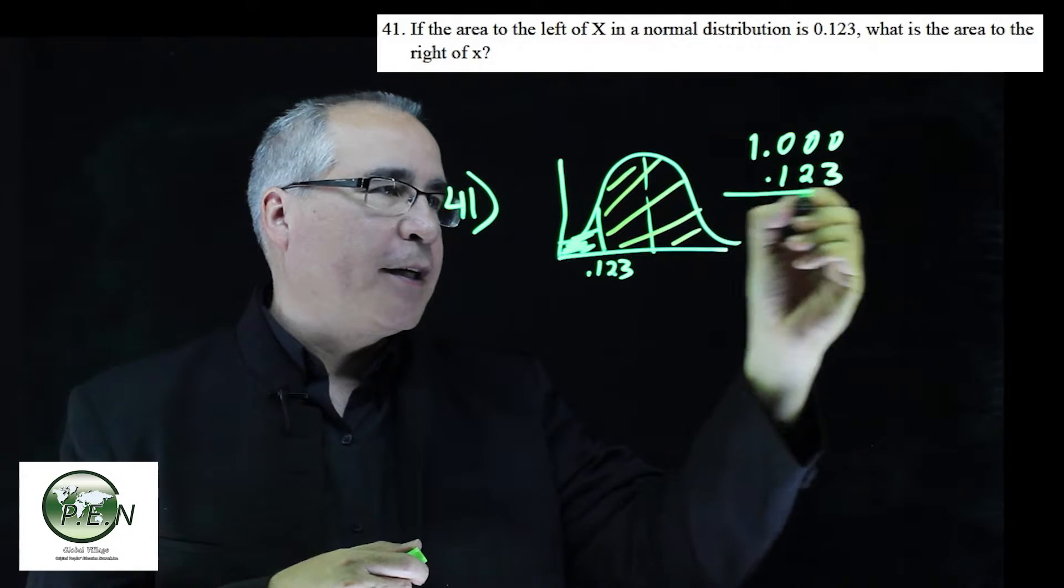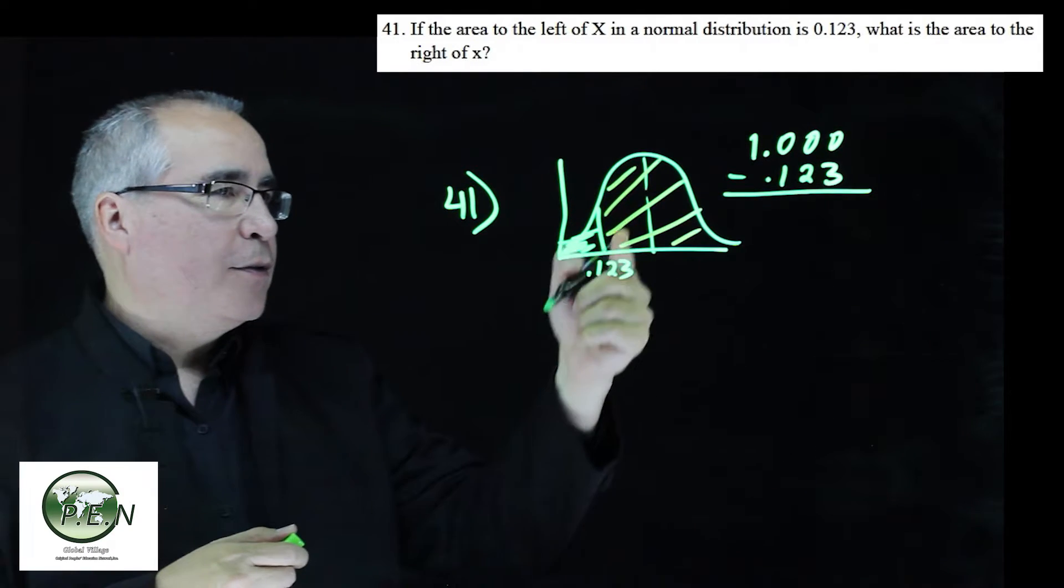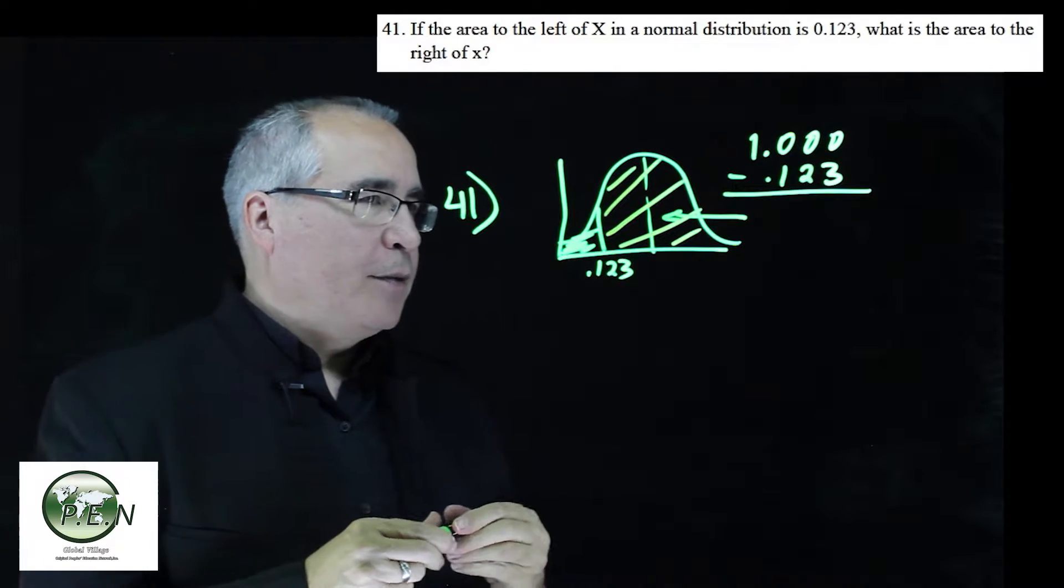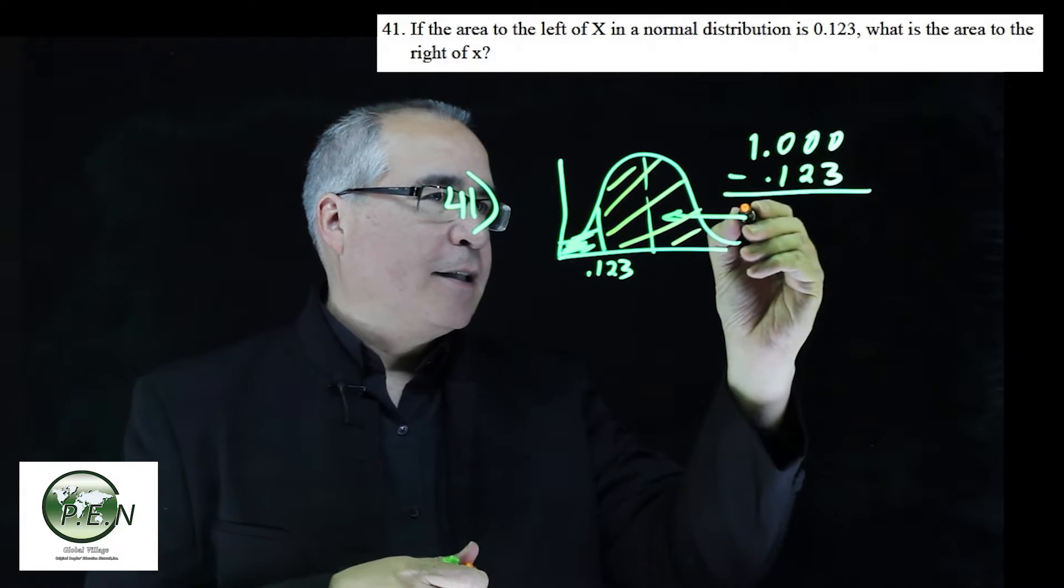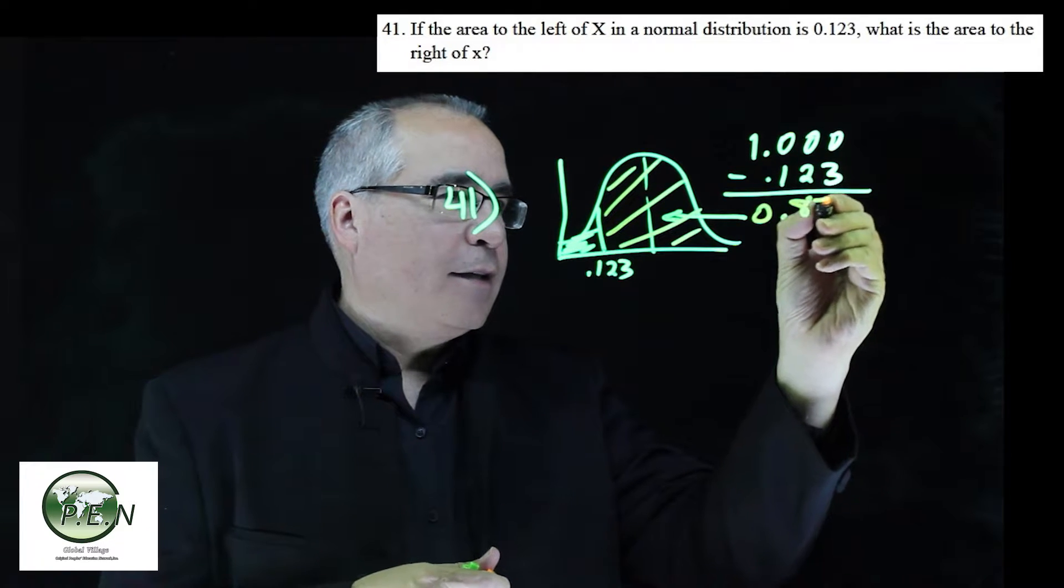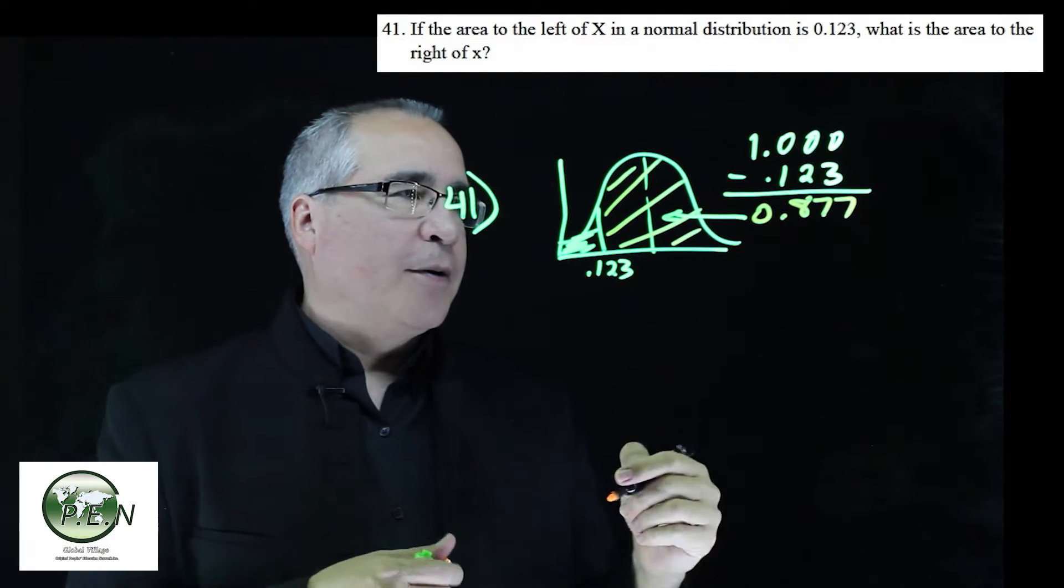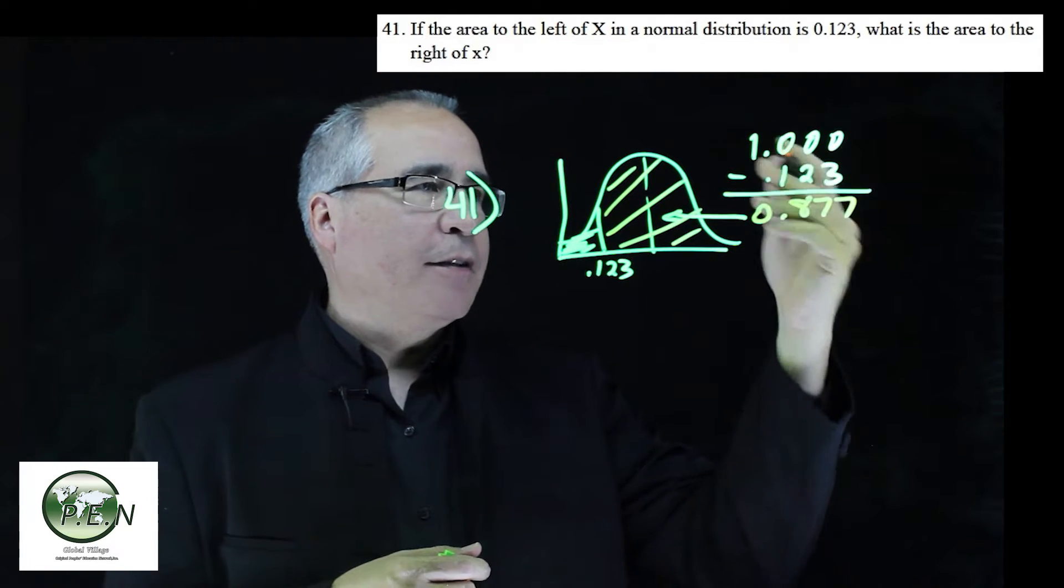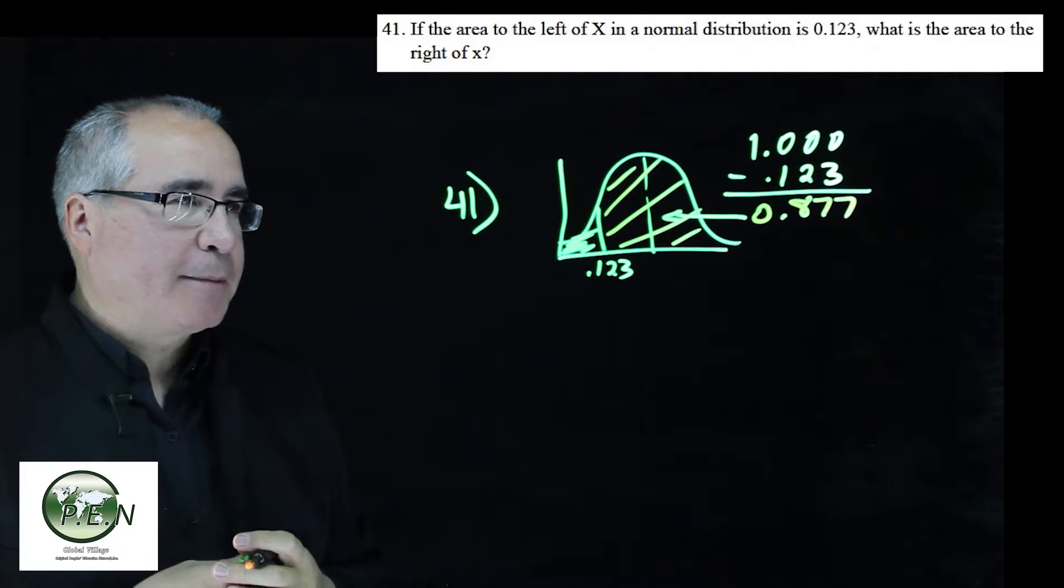Let's put another 0 up there. If we subtract these two, what this will give us is the area to the right. And when we do that, we get 0.877, or again, 87%. So you can think of it as 100% minus 12.3%.